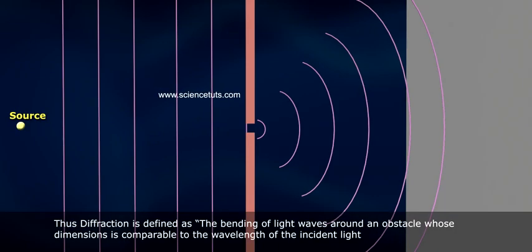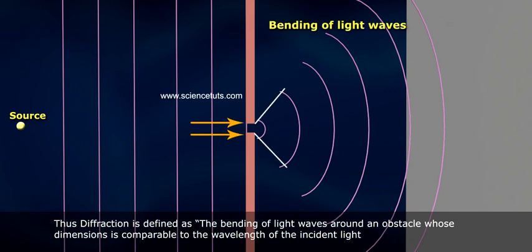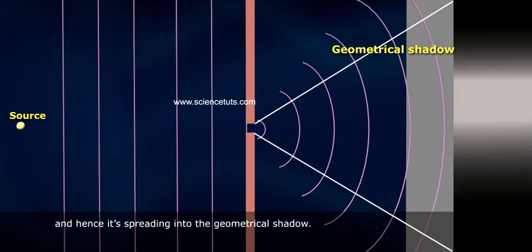Thus, diffraction is defined as the bending of light waves around an obstacle whose dimensions are comparable to the wavelength of the incident light, and hence its spreading into the geometrical shadow.